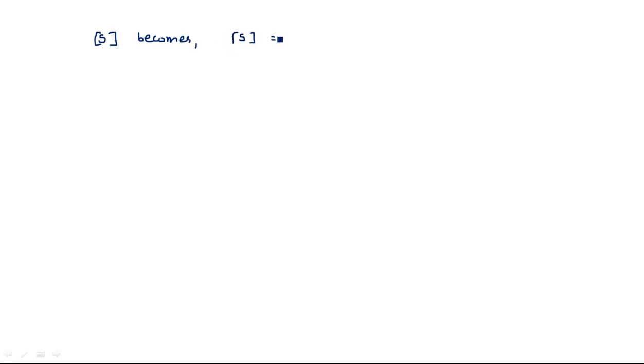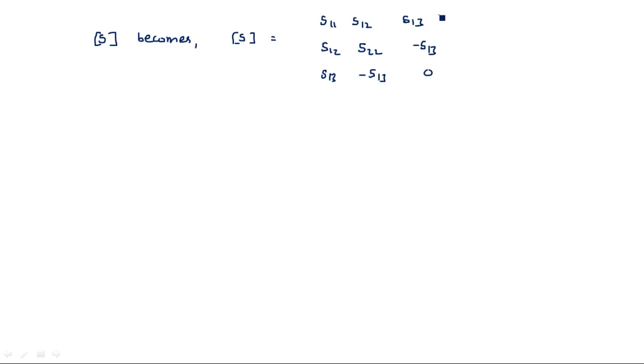With all these assumptions, the S-matrix becomes: S = [S11, S12, S13; S12, S22, −S13; S13, −S13, 0]. This is the S-matrix of the E-plane T-junction after simplification.